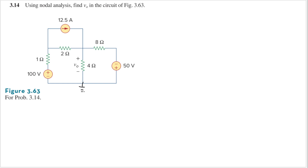Let's use the bottom-most node as our ground, so the voltage there will be zero. Here is v0, and let's name another node v1. This node here is minus 50 because this is the ground and this is the negative terminal of the 50-volt source, so we will have minus 50 here.